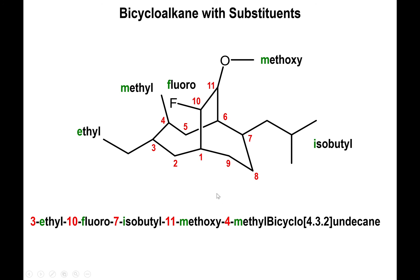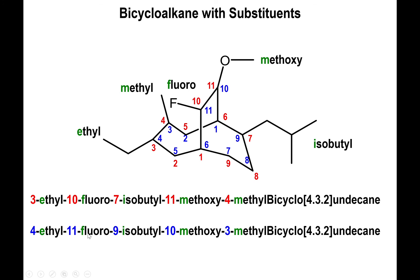Now we check what happens if the back carbon is carbon one. Following the same rules — going in the direction of the most carbons — you go from one to six, then along the second ring. Since carbon nine is now on the back, position ten must also remain on the back, and position eleven follows accordingly. Taking that into account and updating the numbers, we find: fluoro is at position four, isobutyl at position eleven, methoxy at position nine, and methyl at position ten.